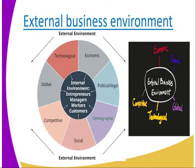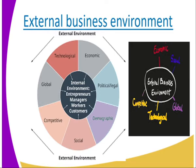We start by looking at the external environment. There is a diagram showing us the external environment — operations from outside the business. We have technology, economic, political issues, demographic, social issues, competitive, and global. That is the external part, as you can see it is outside. The inner circle gives us the internal environment, which we covered in our previous lesson.